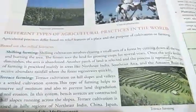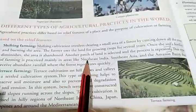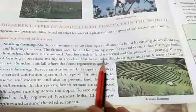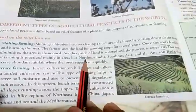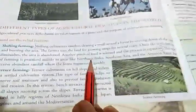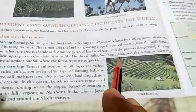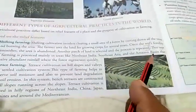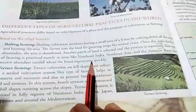In which region is shifting farming practiced in India? For example, northeast India. Other than India, it is also practiced in Southeast Asia and the Amazon basin of South America.